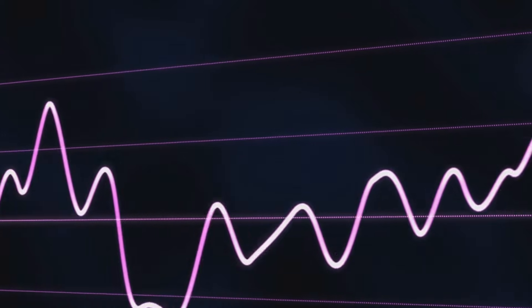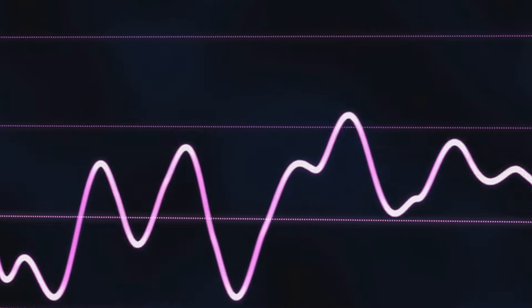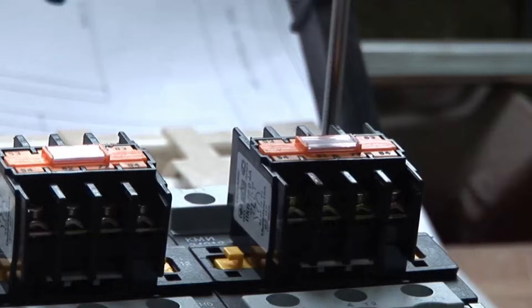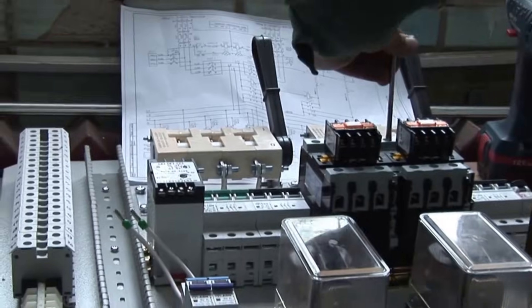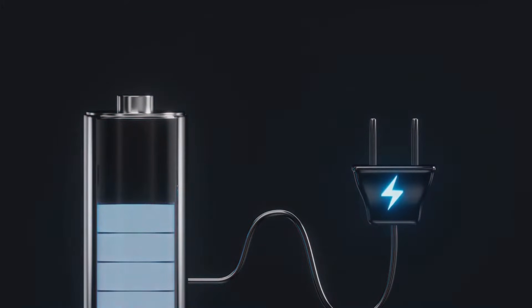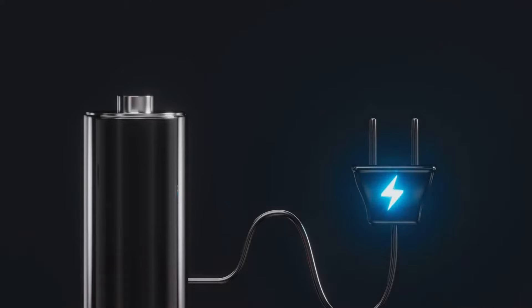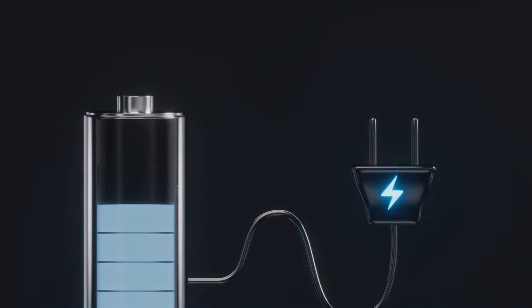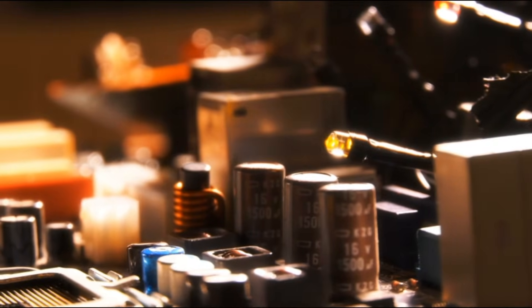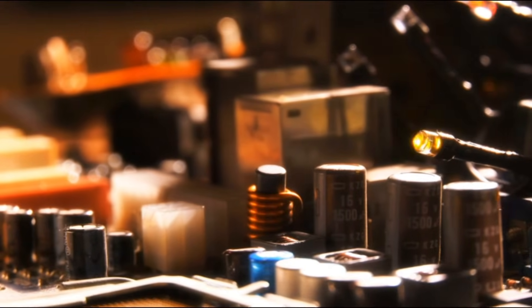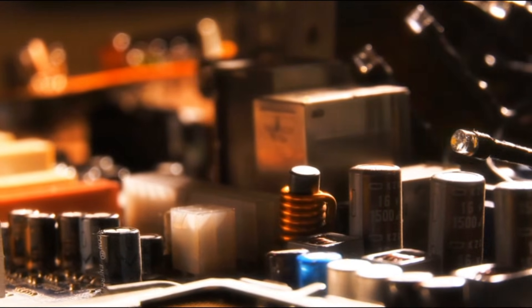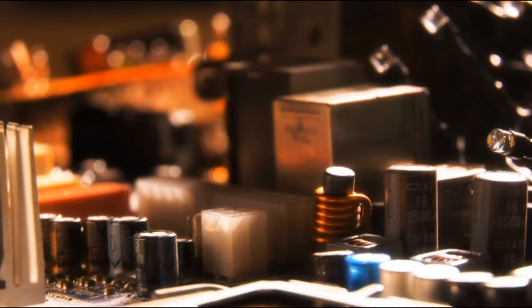These harmonics are unwanted guests in our power systems because their frequencies are higher than the fundamental frequency. Where do these uninvited harmonics come from? They're produced by non-linear electronic loads such as electronic ballasts, variable frequency drives or VFDs, battery chargers, and other electronic devices. When these devices convert AC to DC or vice versa, they use high-speed switching which can distort the waveform and create these harmonics.